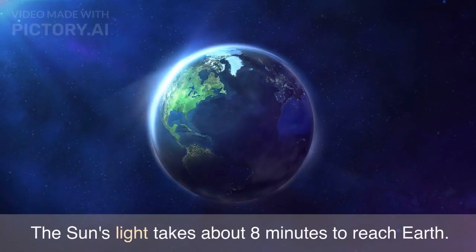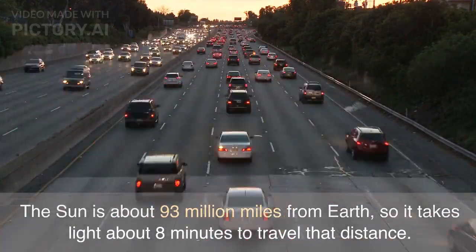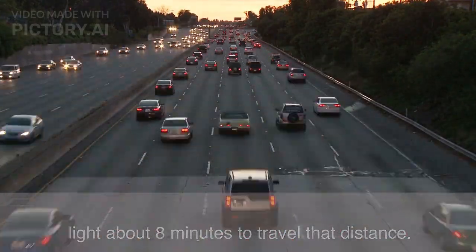The Sun's light takes about 8 minutes to reach Earth. The Sun is about 93 million miles from Earth, so it takes light about 8 minutes to travel that distance.